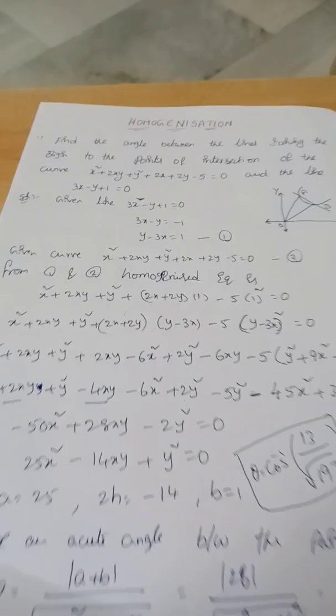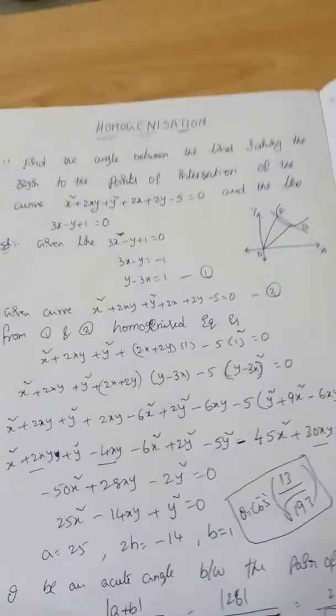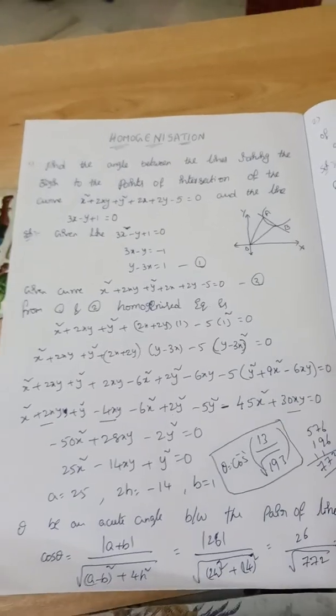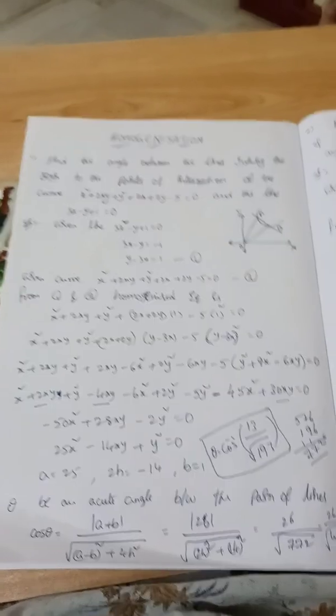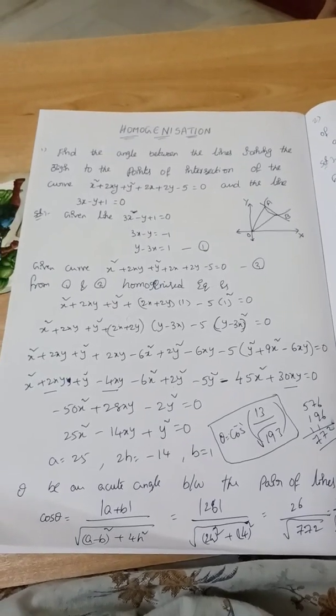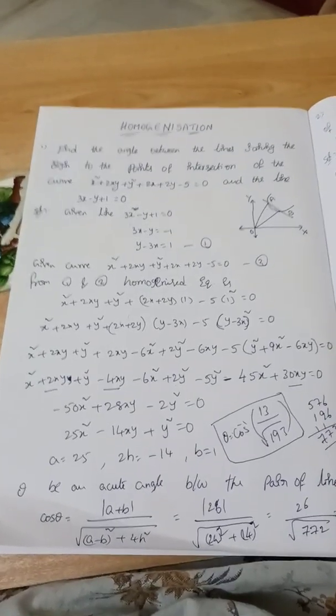Homogenization problem, most important in 1B Max. How to solve this type of question? Let's find the angle between the line joining origin and the points of intersection of the curve and the line. When curve and line is given, how to solve when one and two are given?